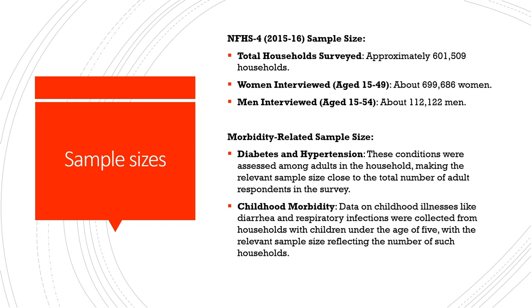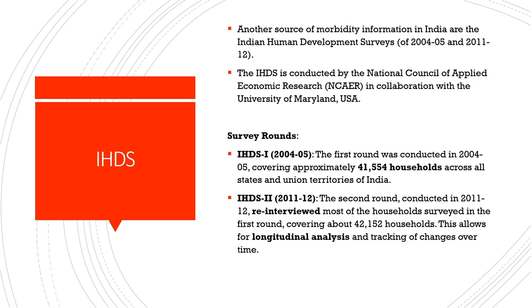We also have information on childhood morbidity because childhood illnesses are an important data source collected in the NFHS. You can also create profiles for children under the age of 5 with relevant sample size reflecting the number of such households. Finally, the IHDS survey — the India Human Development Survey — is another source of important information on morbidity in India, different from the NSSO and NFHS in terms of scope and coverage.